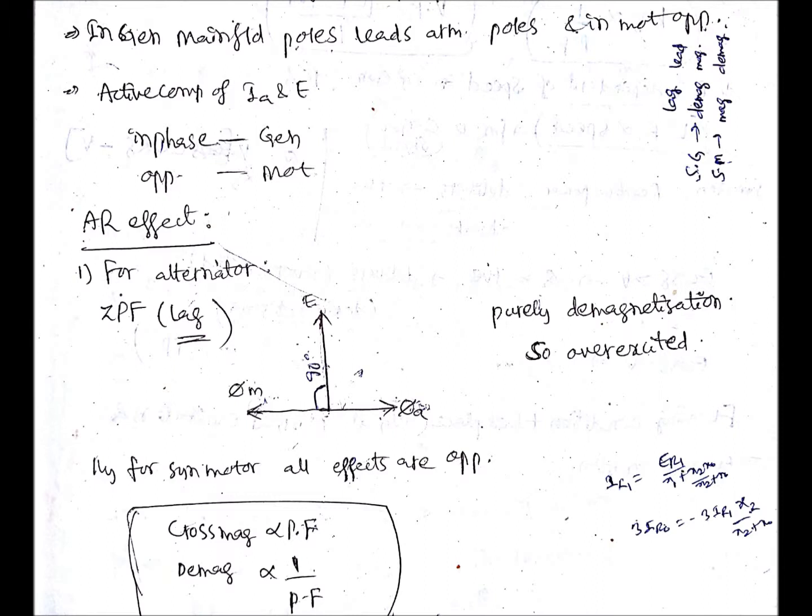For maintaining the required terminal voltage, the alternator must be over-excited — its excitation must be greater than normal excitation, because the armature current is demagnetizing the existing flux. To maintain that, we need to over-excite the alternator. This is for lagging zero power factor. If it is leading zero power factor, it is the opposite — you need to under-excite it. This is for the alternator.